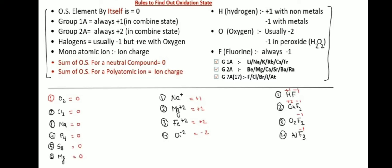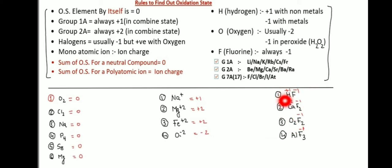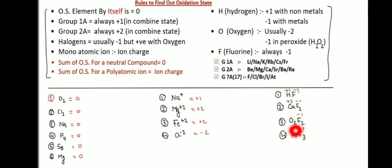Polyatomic ion examples: H+ charge plus one, F- minus one, Calcium charge plus two, Fluorine charge minus one, Oxygen zero, F2 charge minus one, Aluminium zero, F3 oxidation state minus one.